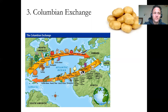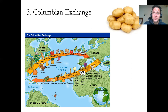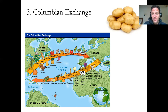Increased food production leads to increased population, and increased population means you have more labor available — more people available to do the work. This is very important once factories start getting built and factory owners need laborers, and mining operations need laborers. If you have a surplus of labor, thanks to a surplus of food, you can get that labor.